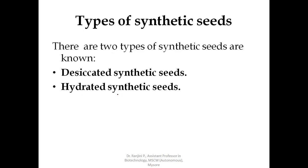Next, we will see what are the types of synthetic seed based on the technology established. There are two types of synthetic seed: one is desiccated synthetic seed and the other one is hydrated synthetic seed. Desiccated synthetic seeds are produced from somatic embryos, either naked or encapsulated in polyethylene glycol (otherwise called polyoxa), at 2%, followed by their desiccation.